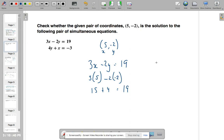Let's look at the second equation. 4y plus x equals negative 3. So let's put y equals negative 2 in there. Plus x, which is 5.